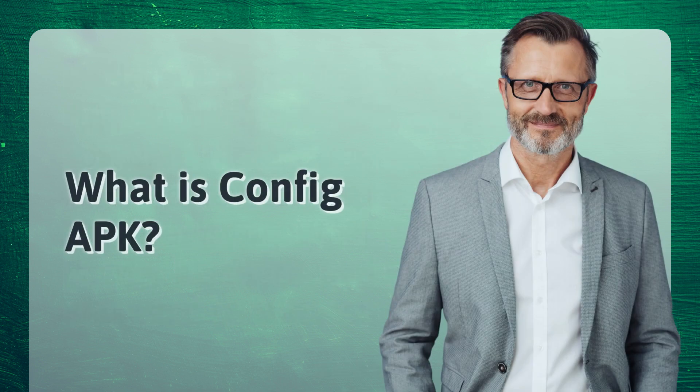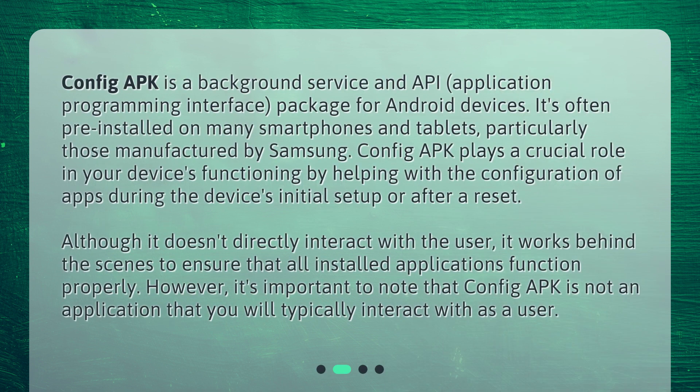Config APK is a background service and API (application programming interface) package for Android devices. It's often pre-installed on many smartphones and tablets, particularly those manufactured by Samsung. Config APK plays a crucial role in your device's functioning by helping with the configuration of apps during the device's initial setup or after a reset. Although it doesn't directly interact with the user, it works behind the scenes to ensure that all installed applications function properly.